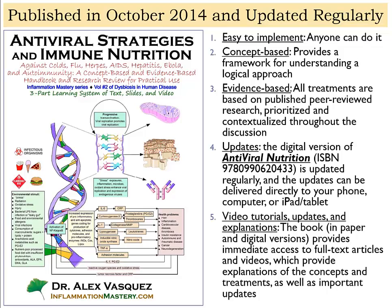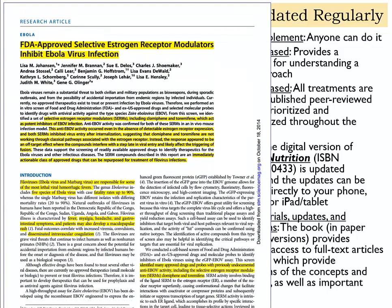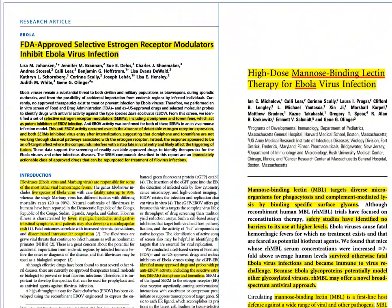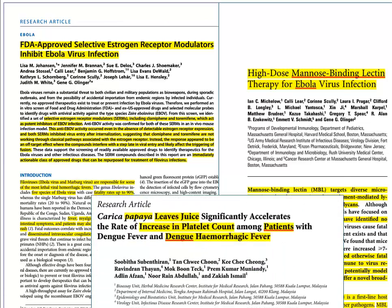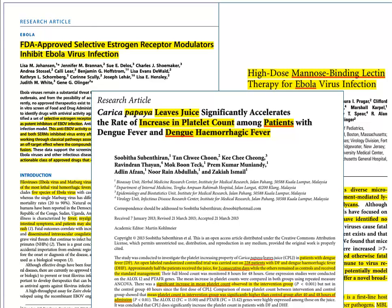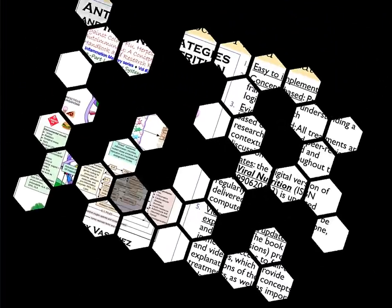Let's look at a few samples of recently published research. Here's an article from 2013 titled 'FDA Approved Selective Estrogen Receptor Modulators Inhibit Ebola Virus Infection.' Here's another article supporting the use of high-dose mannose binding lectin as therapy for Ebola virus infection. And very interestingly, here is an article supporting the use of papaya leaf juice to increase platelet count in patients with dengue hemorrhagic fever — a clinical trial in 228 patients in which beneficial results were noticed within three days.